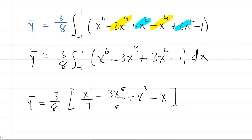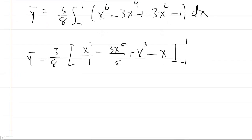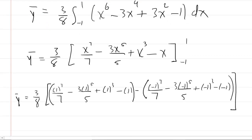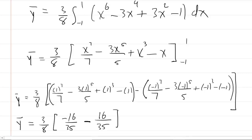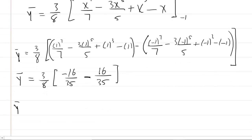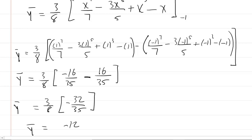Integrating using power rules gives x to the 7th over 7, minus 3x to the 5th over 5, plus x cubed, minus x, evaluated from negative 1 to 1. Plugging in the upper bound of 1 gives negative 16 thirty-fifths, and the lower bound gives positive 16 thirty-fifths. So we have 3 eighths times negative 32 thirty-fifths, which equals negative 12 thirty-fifths. That is the y-coordinate of the centroid.